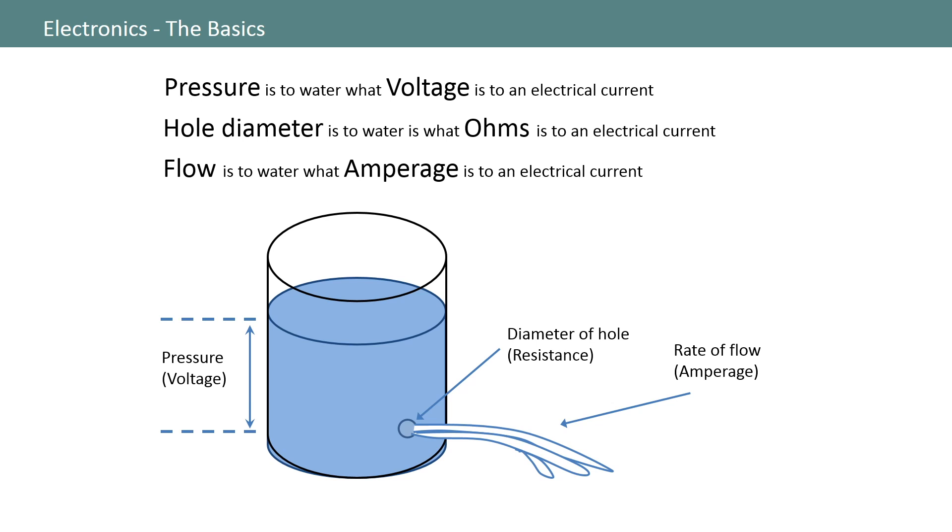Also, if I decrease the resistance on the system by making the hole bigger, I'll get more current flowing out of the bucket, whereas if I make the hole smaller, less current will flow.